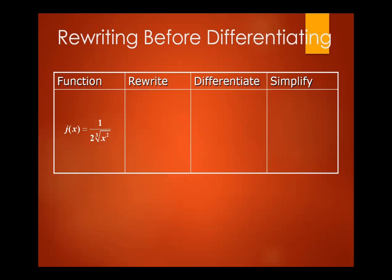J of X equals 1 over 2 times the cube root of X squared. Simplify first: that is 1 over 2, and change to exponential form — X to the power 2 thirds. So we have 1 half times X to the power negative 2 thirds. The derivative: 2 thirds minus 1 is negative 5 thirds. Final answer: negative 1 over 3X to the power 5 thirds.